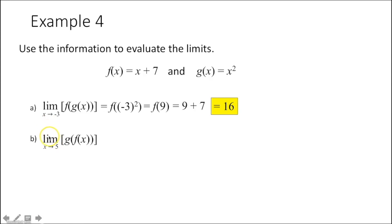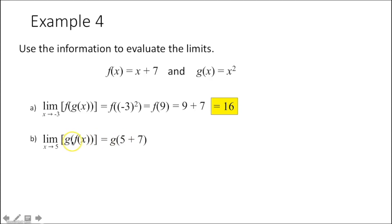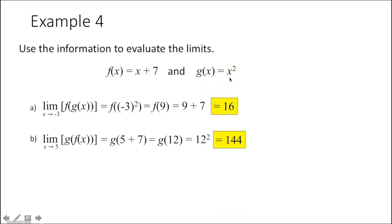Another example: the limit as x approaches 5 of g(f(x)). First, plug 5 into the innermost function f(x): 5 + 7 = 12. Then plug 12 into g(x): 12 squared is 144. So the limit as x approaches 5 of g(f(x)) equals 144.